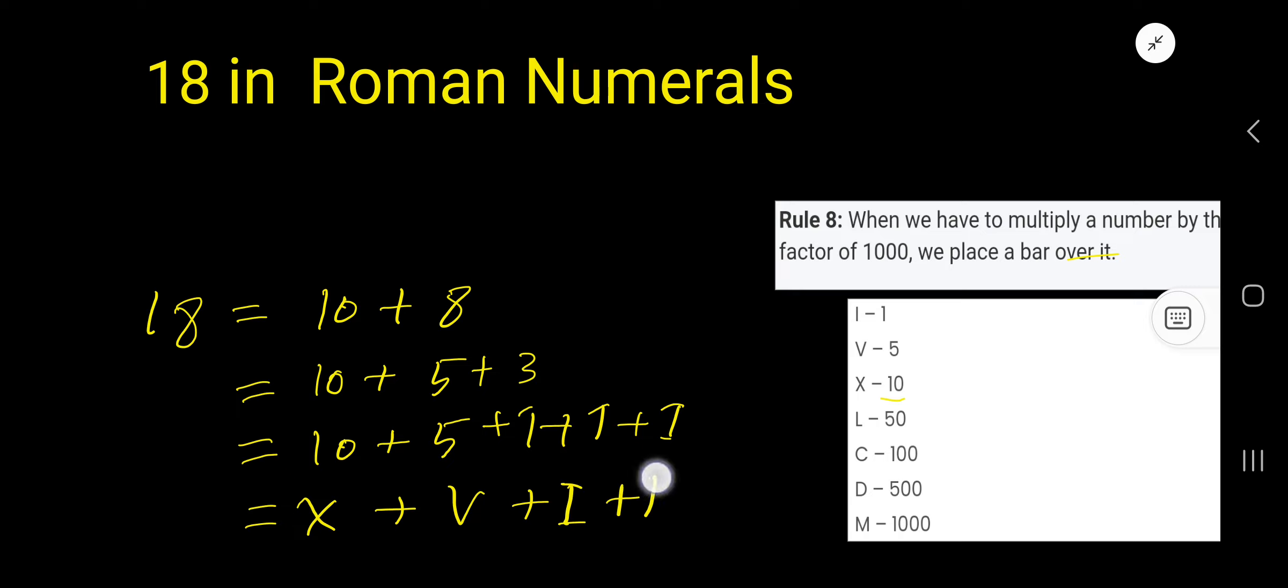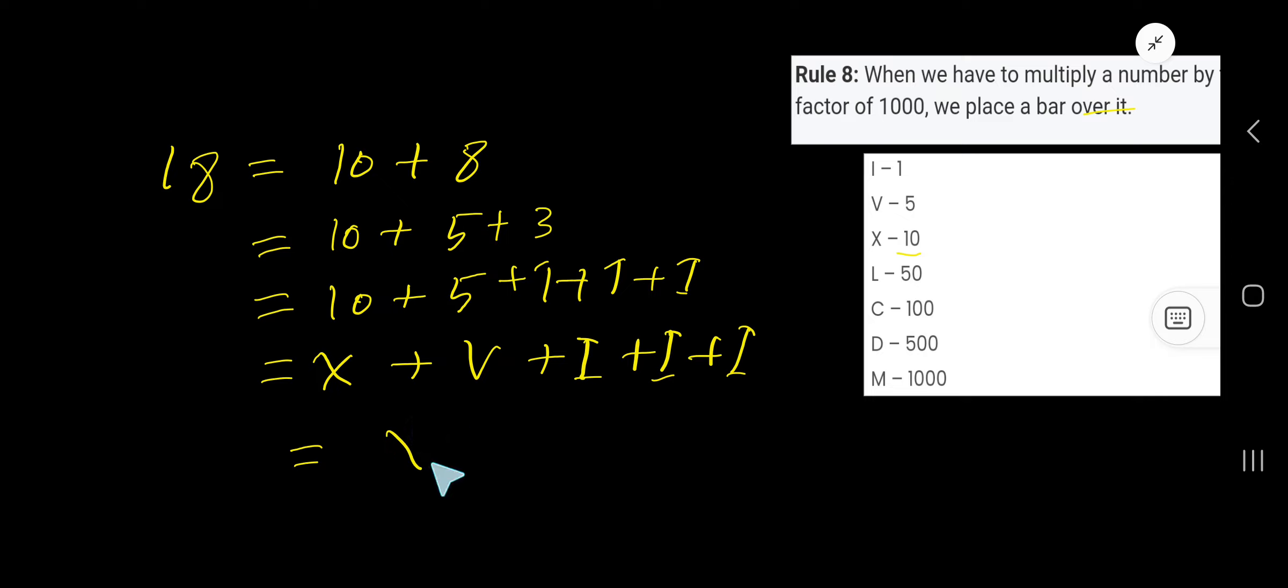Now place them side by side: X, V, I, I, I. This is XVIII, the equivalent of 18 in Roman numerals. X means 10 and VIII means 8. If you place lower valued Roman numerals after higher valued ones...